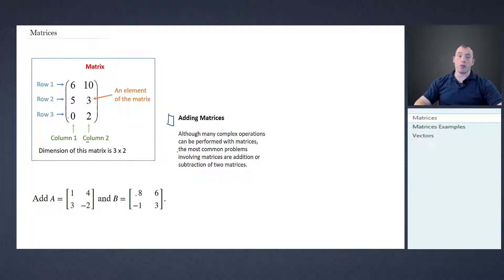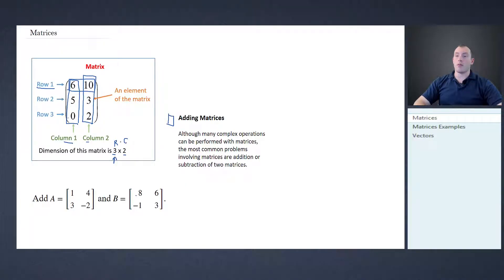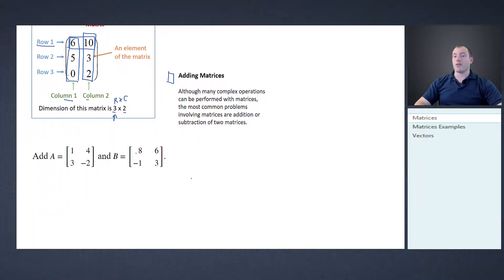Before we think about adding, we need to understand how matrices are organized. We have columns — shown in green here — columns go up and down, think of the columns of a building. Rows go left to right, horizontal. Columns go up and down, and therefore rows go across. In the formula, this number three always represents the number of rows and this two represents the number of columns — rows come before columns.